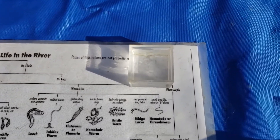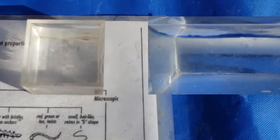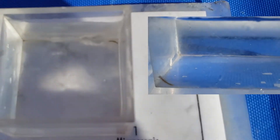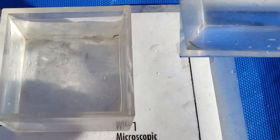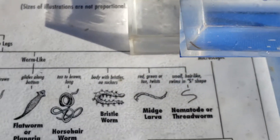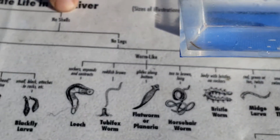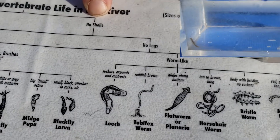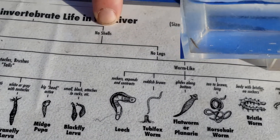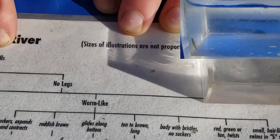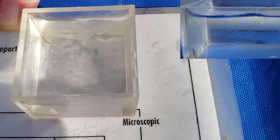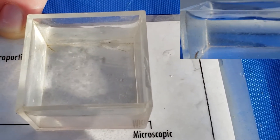The first question is: does it have a shell? This one doesn't have a shell like a snail would, so I'm going to go over to the no shells section. The second question is: does it have legs or no legs? And this macroinvertebrate definitely has legs, so let's go over to the legs section.